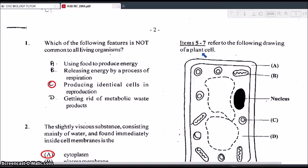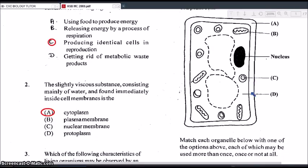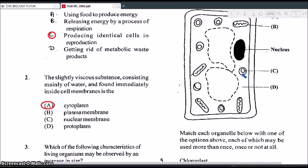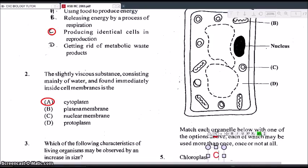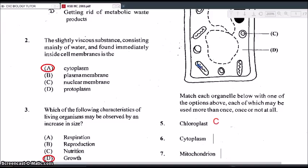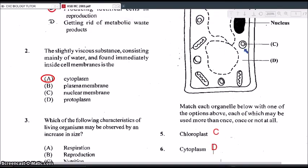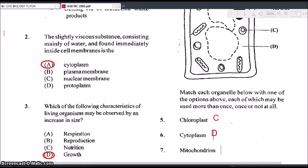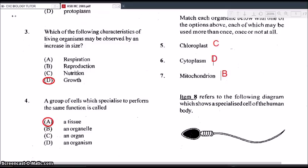Okay, items 5 to 7 refer to the following drawing of a plant cell. Match each organelle below with one of the options above, each of which may be used more than once or not at all. Alright, so with number 5, we have the chloroplasts. So the chloroplasts would be C. The cytoplasm would be D. And the mitochondria would have to be B. So that elongated organelle with the squiggly structure there. That is the mitochondria. So remember, the chloroplasts is the site of photosynthesis. The cytoplasm is the fluid region of your cell. And the mitochondria is the site of respiration.